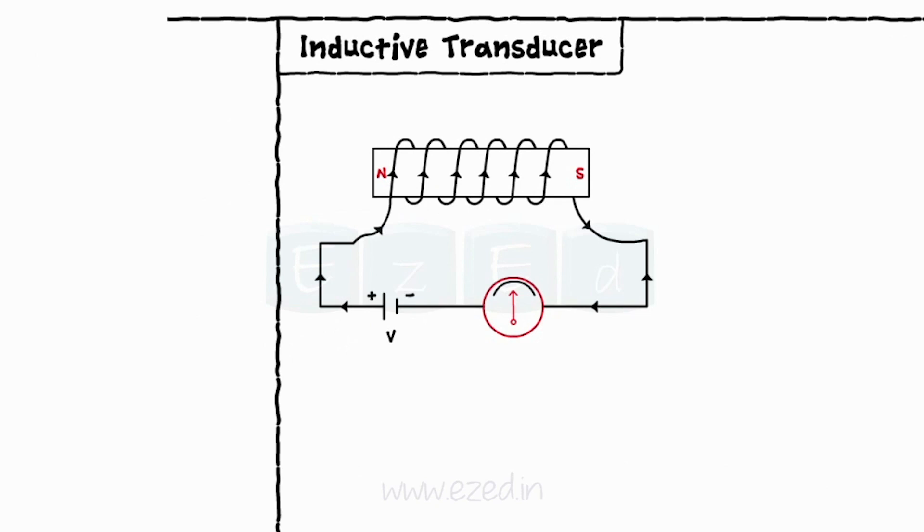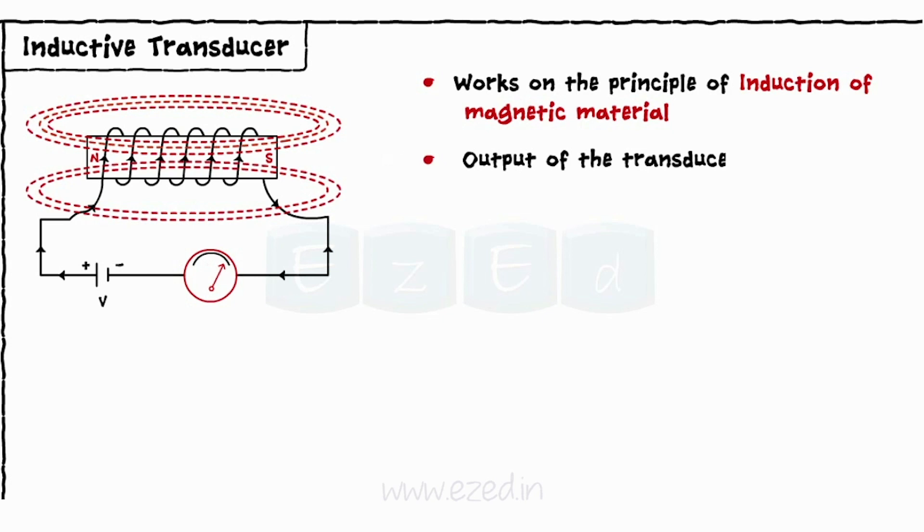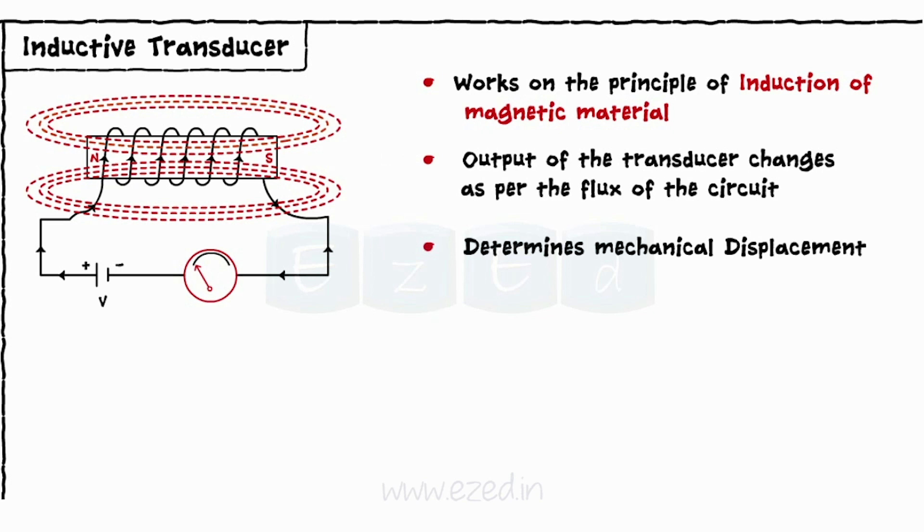Next type of transducer is an inductive transducer. Inductive transducers work on the principle of the induction of magnetic material. In an inductive transducer, output of the transducer changes as per the flux of the circuit, thereby determining the mechanical displacement of an object.